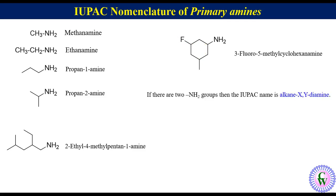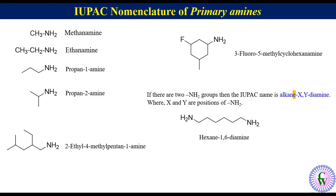If there are 2 NH₂ groups, the IUPAC name is alkane-X,Y-diamine, where X and Y are the positions of the NH₂ groups. One thing to note here is that in the case of diamine, the alkane name contains an 'e'. For example, hexamethylenediamine is named as hexane-1,6-diamine.